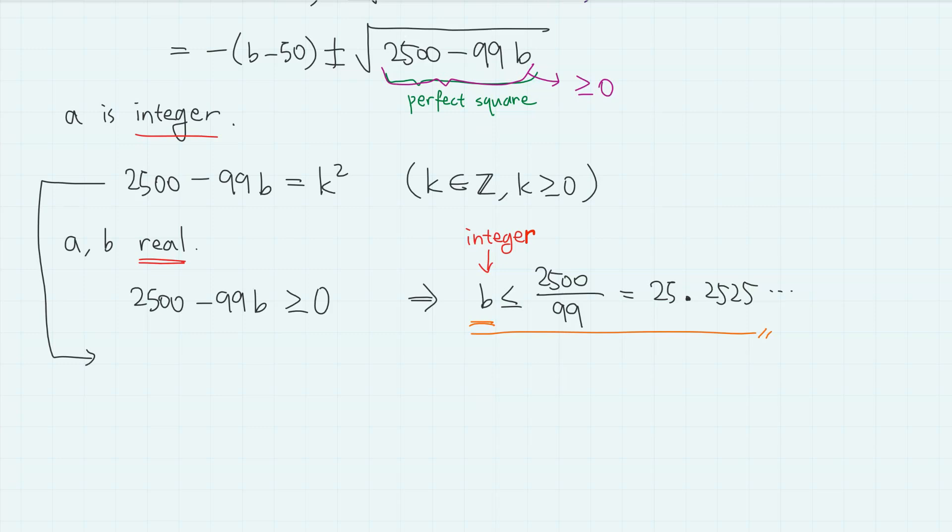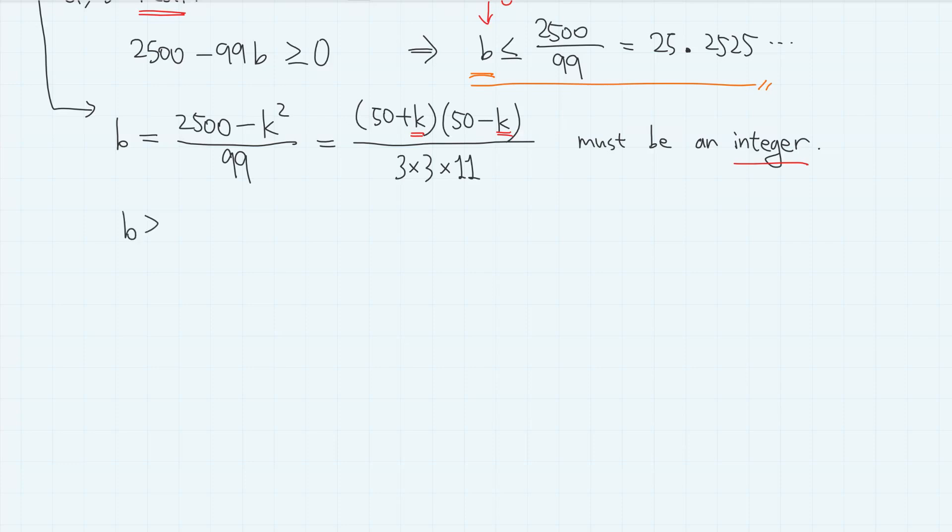Notice that from here, we can rearrange into b equals (2500 minus k squared) divided by 99. And the numerator can be factored into (50 plus k) times (50 minus k). And the prime factorization of 99 is 3 times 3 times 11. We can use the condition that b must be an integer to find suitable integer values for k. It is also beneficial to use the condition that b must be non-negative, so that 2500 minus k squared is greater than or equal to 0. And since we let k as a non-negative integer, we have k greater than or equal to 0 and less than 50. We can narrow down the values for k using the fact that (50 plus k) times (50 minus k) must be a multiple of 11.